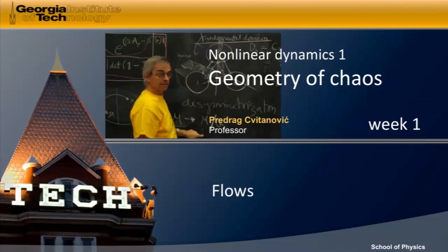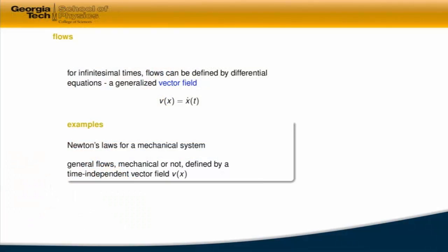We just saw that the law of motion in deterministic systems could be either a flow or a map. So let's discuss flows in a little more detail. For infinitesimal times, you think of a flow as a curve through a space. For a very short instant in time, that curve has a tangent. Here is a trajectory at time t — we are here, and at that instant we have a tangent to the curve, and that tangent is called the velocity field at point x at that time.